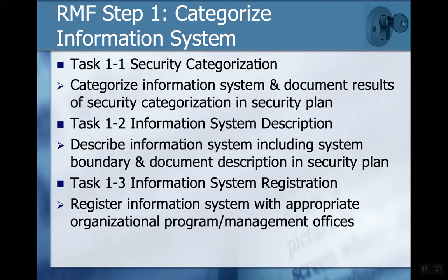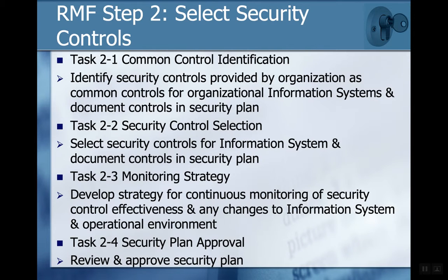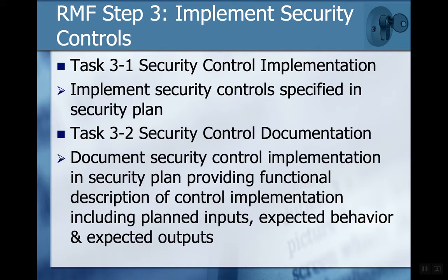The RMF has a step-through process. Basically, step one is categorization — define and put a systems description, register it, make sure you can track it. The second step is to select the controls — what are the controls that are out there. This document actually describes a lot of this, so it's not something you have to make up out of thin air. There's a lot of reference information that can be pulled. It's more a matter of applying it to the particularities of your situation, developing different strategies around monitoring and getting an approval. It's a very formalized structure, and you implement the plans you've identified and document everything.